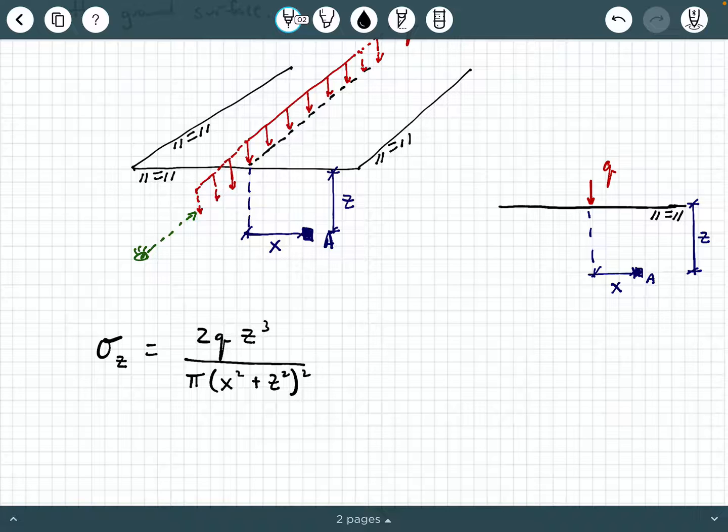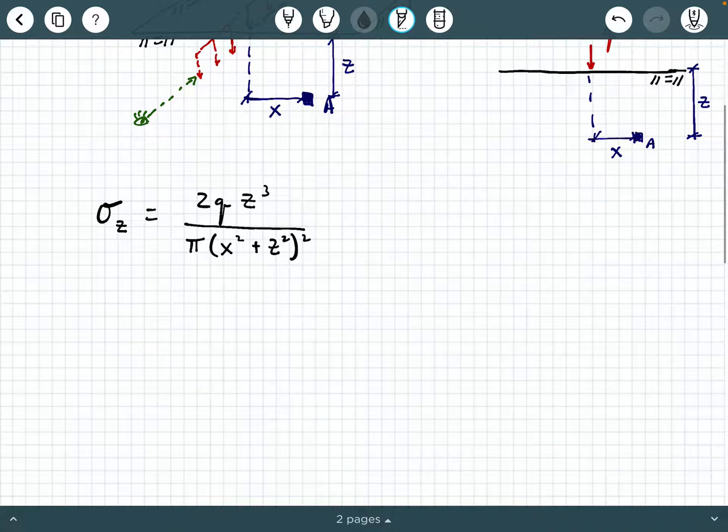So this is how we calculate the stress at this point A beneath the ground surface that is due to an applied line load that's very long Q at the ground surface. Now, there's a lot of great textbooks out there that go over this theory. One of them that I'm personally a big fan of is DAS and Siva Kugan, which is in its fifth edition right now.